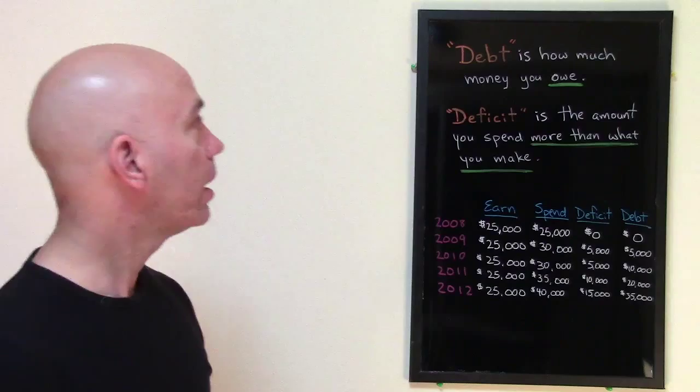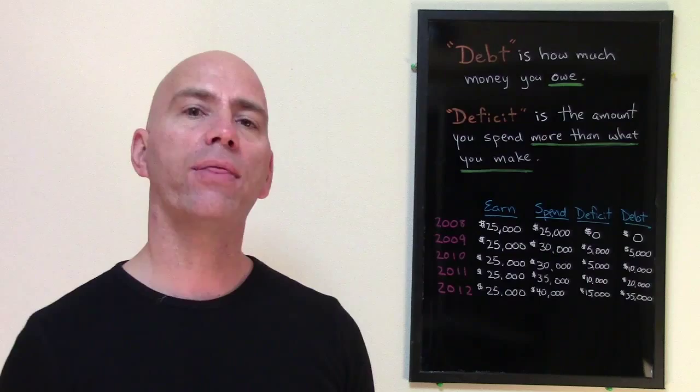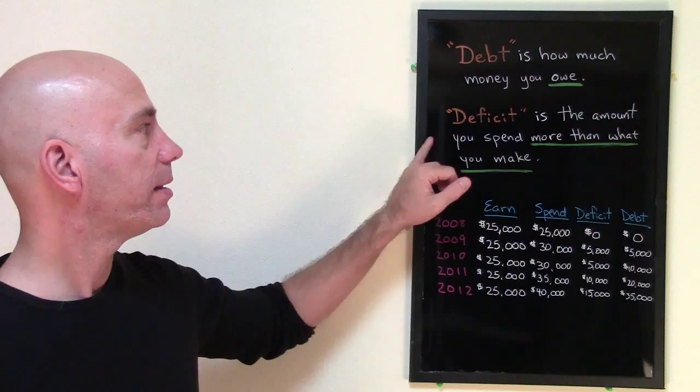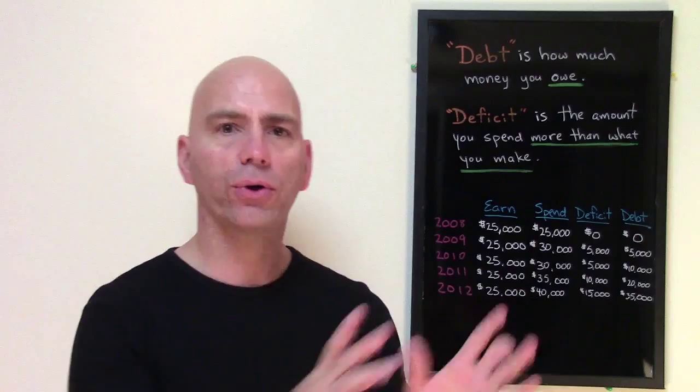So let me explain what the difference is between these two words. Debt is how much money you owe — the total amount of money that you have to pay someone back. You borrowed it, now you have debt, you have to pay it back. The deficit is the amount of money that you spend more than what you make.